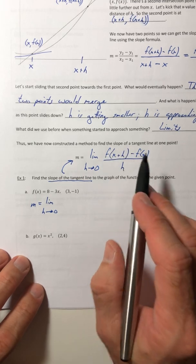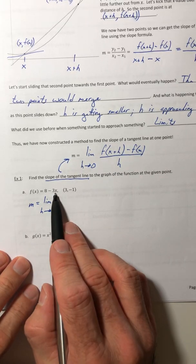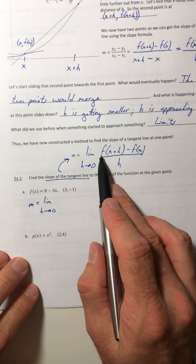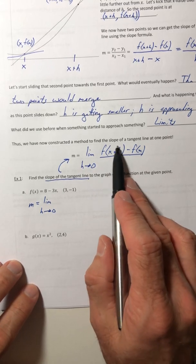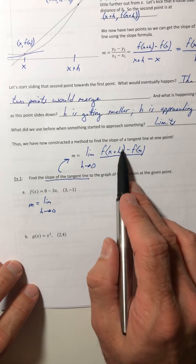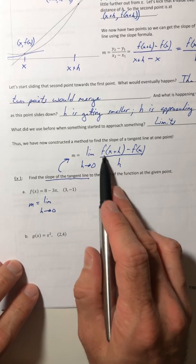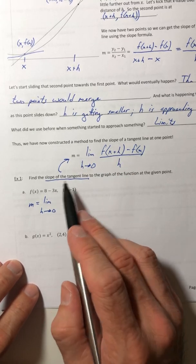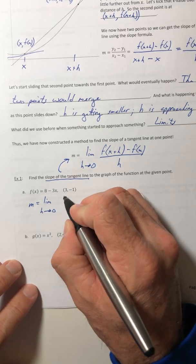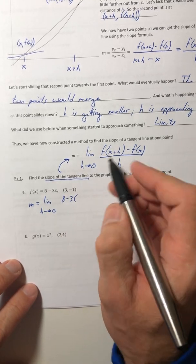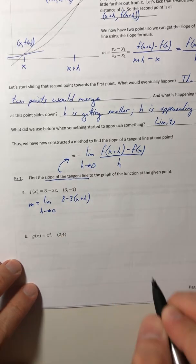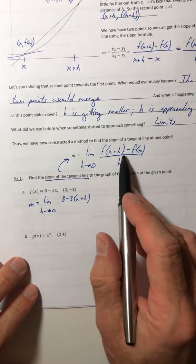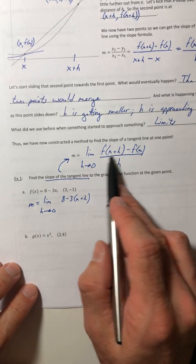is f of x plus h. So this is your function, so I have to figure out what is f of x plus h. Well, what's inside the parentheses? x plus h. So what do you do with what's inside the parentheses? You plug it in for x. So plug x plus h into the x and you get that.